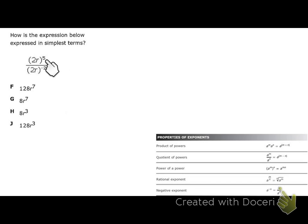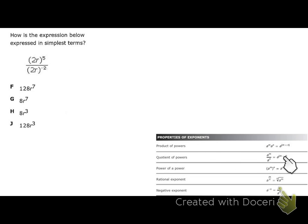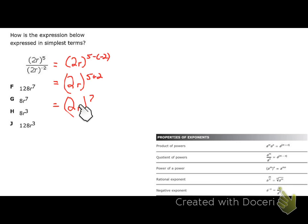Next: how is the expression 2r to the fifth over 2r to the negative second expressed in simplest terms? The base in the numerator and denominator is both 2r, so when dividing with the same base we subtract exponents. That gives 2r to the power of 5 minus a negative 2, and subtracting a negative is the same as adding, so we get 2r to the seventh.